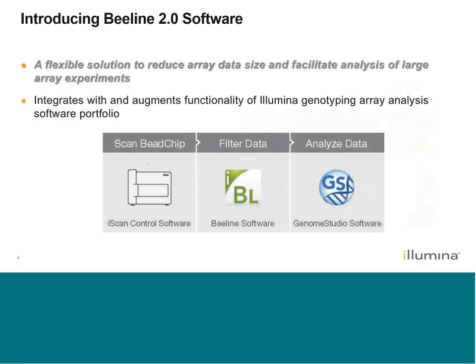We really want to introduce this software today, specifically Beeline 2.0. What is Beeline? We're going to describe it as a companion software for our current genotyping array analysis portfolio, which most of the time includes Genome Studio software. Beeline is meant to provide a flexible workflow and to augment existing functionalities in Genome Studio and iScan control software in order to facilitate analysis of large array experiments. Beeline is not meant to be a replacement for Genome Studio, but really is meant to be kind of an expansion pack to help you with streamlining that analysis workflow.